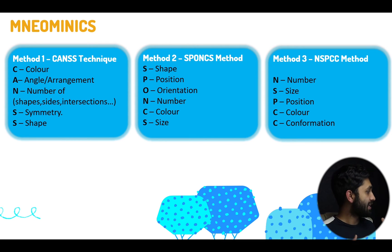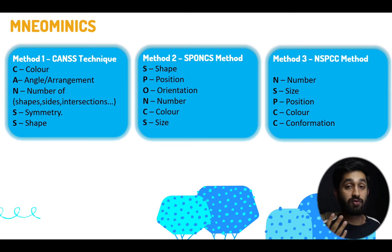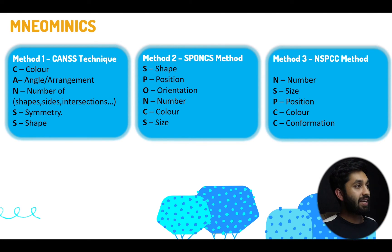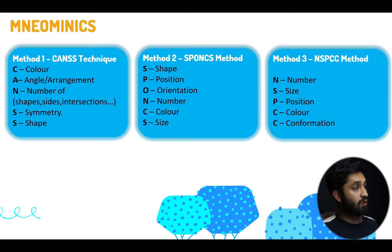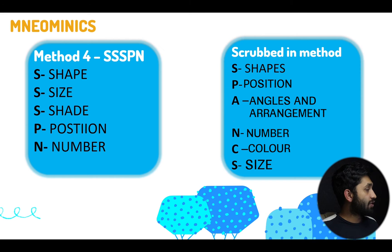Continuing CANS: S stands for shape intersections, and S for symmetry, S for shape. Method number two is SPONKS: S stands for shape, P for position, O for orientation, N for number, C for color, S for size. Method number three is NSPCC: N for number, S for size, P for position, C for color, and C for confirmation.